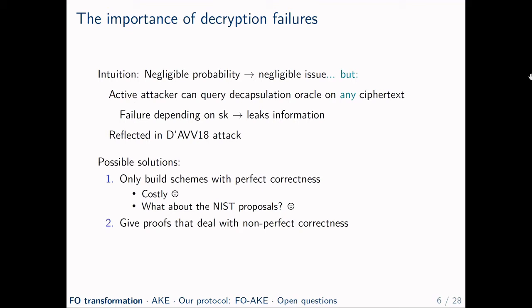So how do we cope with this situation? One possible solution would be to only build schemes with perfect correctness. But this is quite costly — while lattice-based encryption schemes can be made perfectly correct by limiting the noise and setting the modulus large enough, increasing the modulus makes the problem easier to solve. The dimension then needs to be increased to maintain the same security level, leading to greater public key and ciphertext length. Also, many NIST submissions deliberately chose imperfect correctness, and those would not be covered by any analysis that doesn't deal with non-perfect correctness. So the better solution is to give proofs that deal with non-perfect correctness.